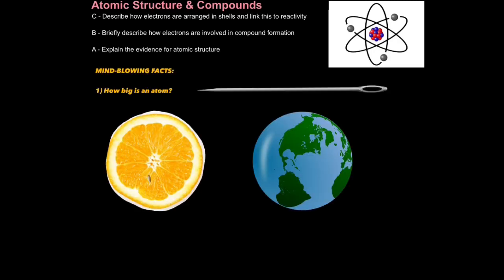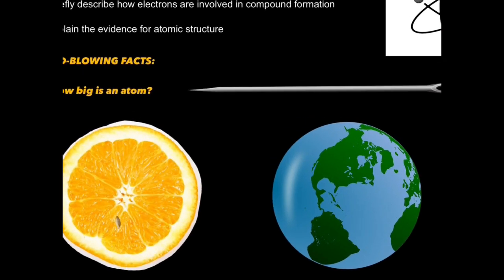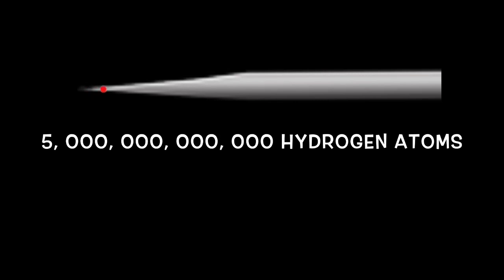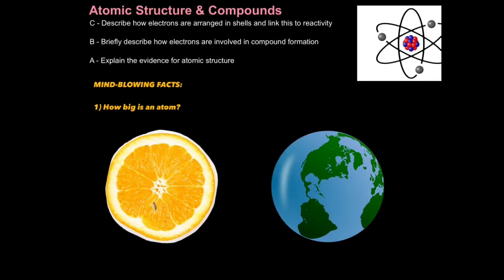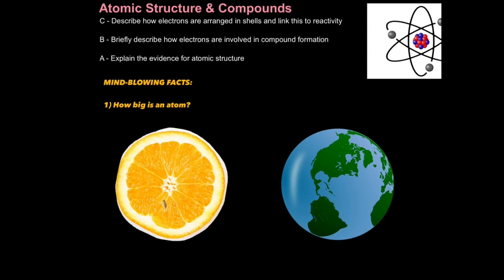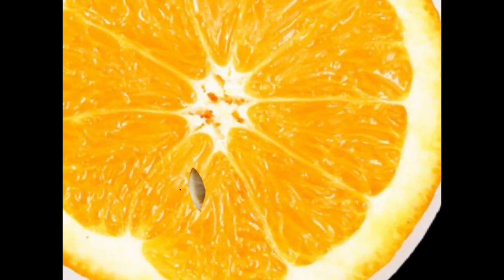How big is the atom? I could explain this to you in two ways. The first way is to say that 5,000 billion atoms can actually fit onto the head or the tip of a needle. And that's pretty amazing. Well, let's think of it another way. Let's zoom inside the orange and go near the pip.